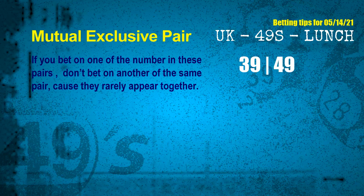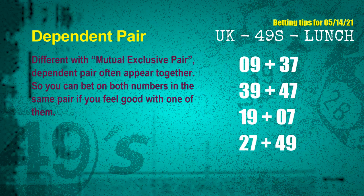The mutual exclusive pair for next draw is 39 and 49. Some numbers are dependent — in a dependent pair, you can bet on both because they are often drawn together in one draw. The dependent pairs for next draw are: first pair 09 and 37; second pair 39 and 47; third pair 19 and 07; fourth pair 27 and 49.